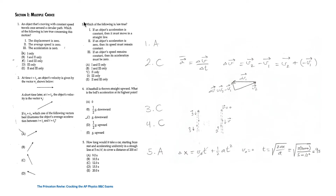The answer for question 3 is C, which is statement 2 only. Statement 1 is false — for example, for a projectile, it only experiences constant acceleration due to gravity directed downward throughout its motion, but still travels in a curved path. So constant acceleration does not necessarily mean straight-line motion.